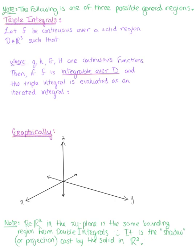Let's suppose that F is a continuous function over a solid region D, such that D is the set of all ordered triplets x, y, z, such that x is greater than or equal to a, less than or equal to b, and y is greater than or equal to h(x), less than or equal to g(x).